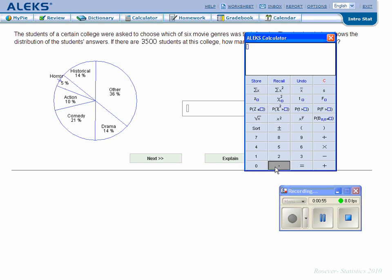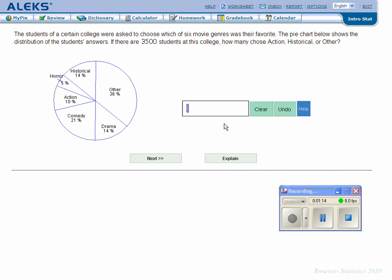If you're not sure what that is, you can always hit calculator. 0.6 times 3,500 gives you 2,100. You type that in here and you are done with that. It's very simple.